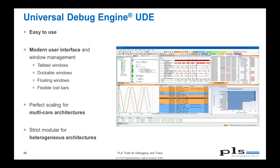We provide a modern user interface with modern window management, including tabbed windows, dockable windows, floating windows, and toolbars that can be tailored to your needs. The software architecture is designed to scale perfectly to state-of-the-art multicore architectures and also for upcoming new devices very easily and quickly. We also support very heterogeneous architectures — the AURIX, for example, is a kind of heterogeneous multi-controller architecture.